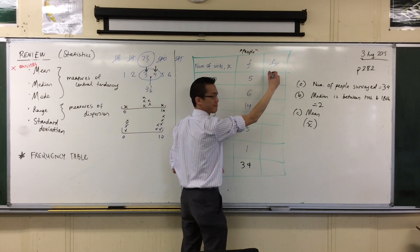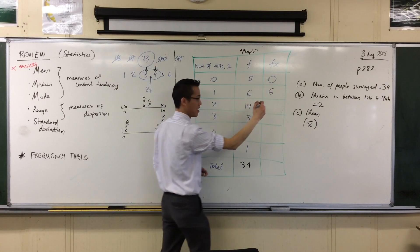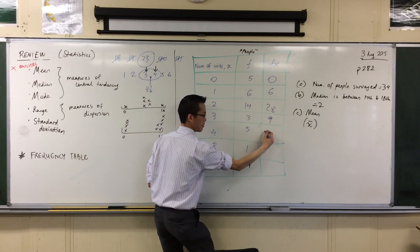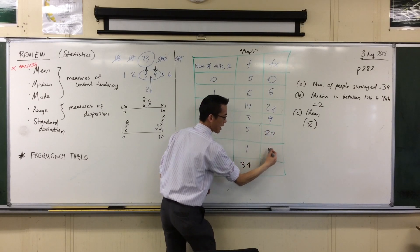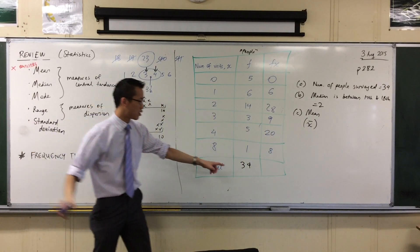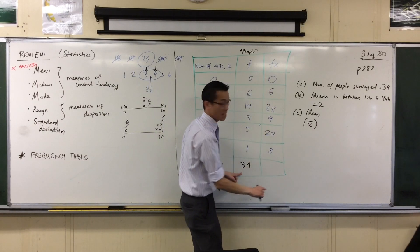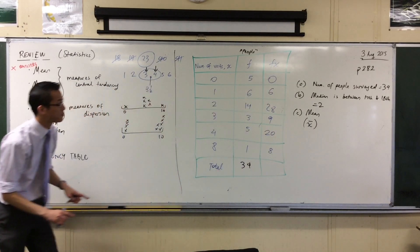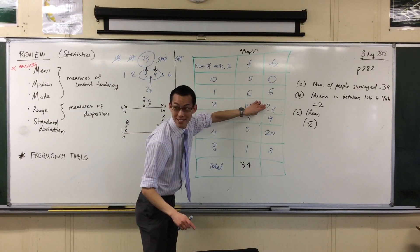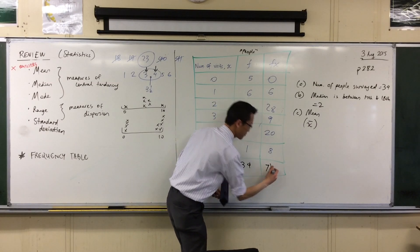So help me out: 0 by 5 is 0; 1 by 6 is 6; 2 by 14 is 28; then 9, then 20, and 8. So I want all the visits that the doctor has gotten, so I'm going to need to add these up. Adding them gives us 71.